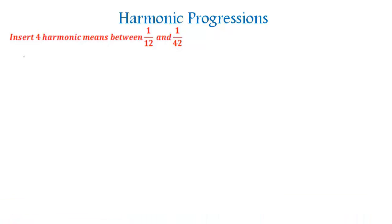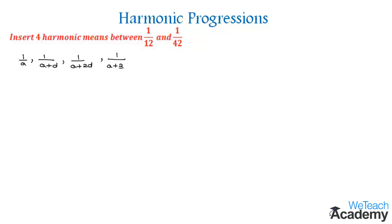Let us consider 1/a, 1/(a+d), 1/(a+2d), 1/(a+3d), 1/(a+4d), 1/(a+5d) as the six terms of the harmonic progression. So we have the first term as 1/a and the last term as 1/(a+5d).